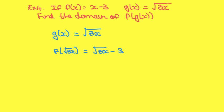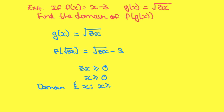Now to find the domain, the limiting value occurs with the square root of 3x. The square root of 3x must be greater than or equal to 0, so 3x must be greater than or equal to 0, so x must be greater than or equal to 0. The domain is x belongs to any real number where x is greater than or equal to 0.